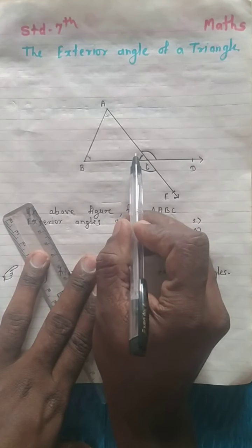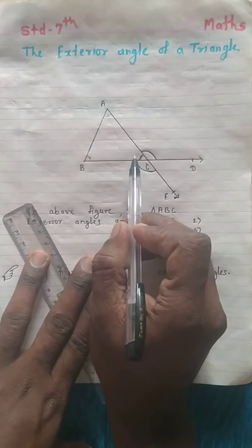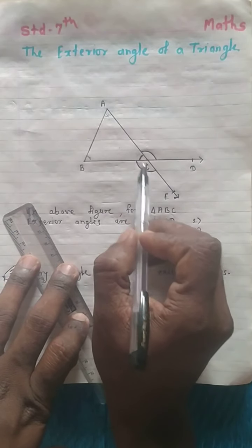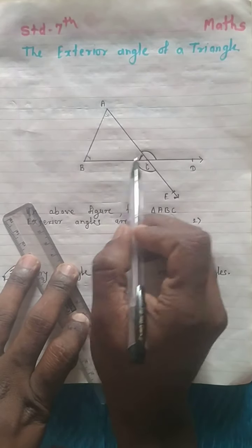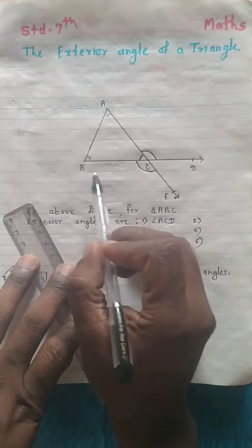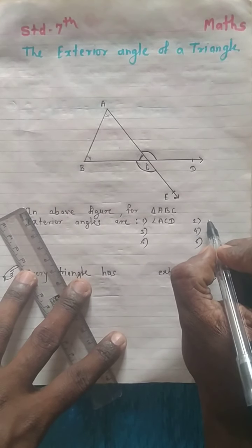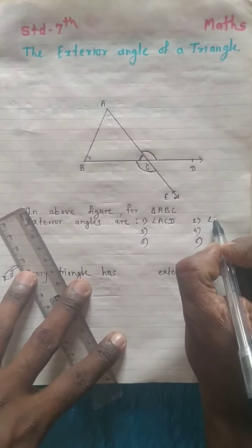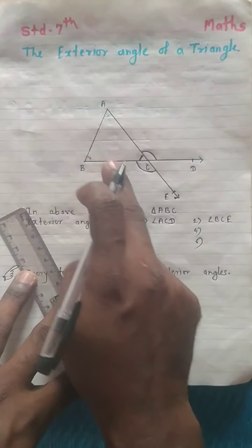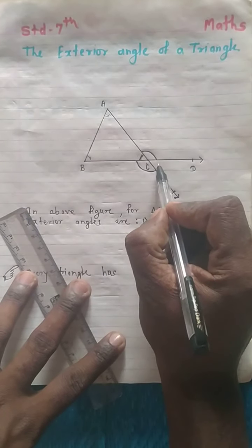Angle BCE makes a linear pair with interior angle C. These two angles are a linear pair. So angle BCE is also an exterior angle — it is the second exterior angle of triangle ACB.